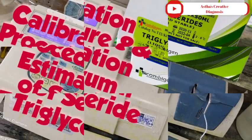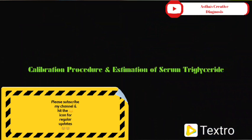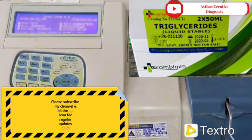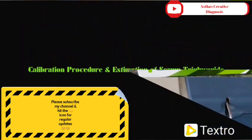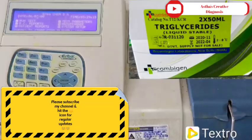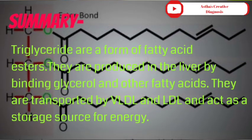Hello friends. Today's topic is the calibration procedure and estimation of serum triglycerides. Triglycerides are a form of fatty acid esters. They are produced in the liver by binding glycerol and other fatty acids, and are transported by VLDL and LDL. They act as a storage source for energy.